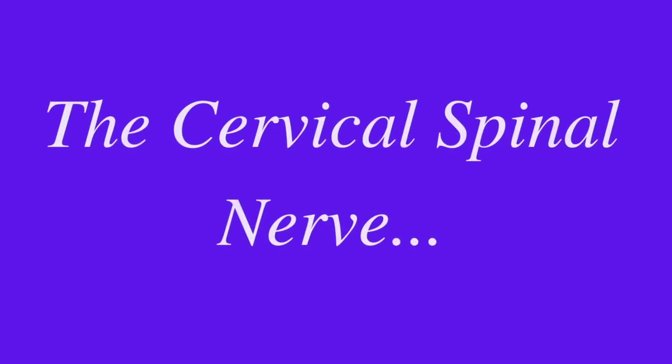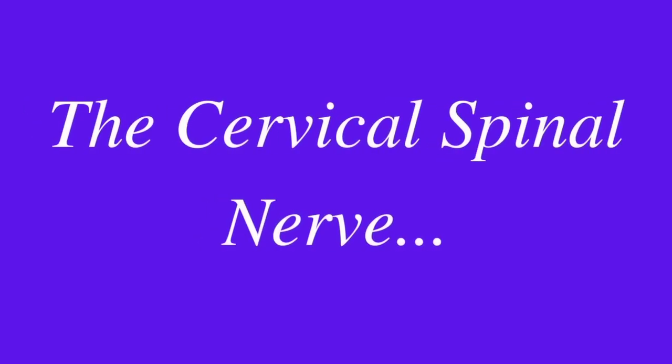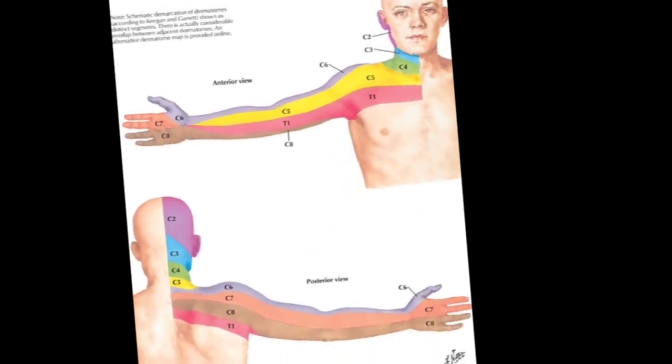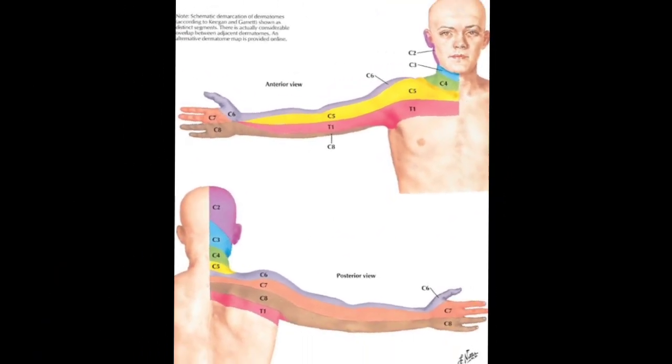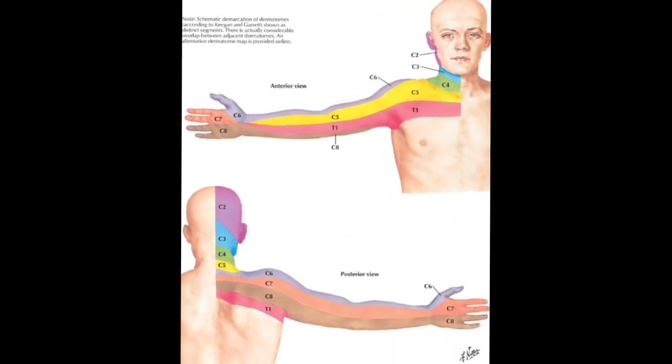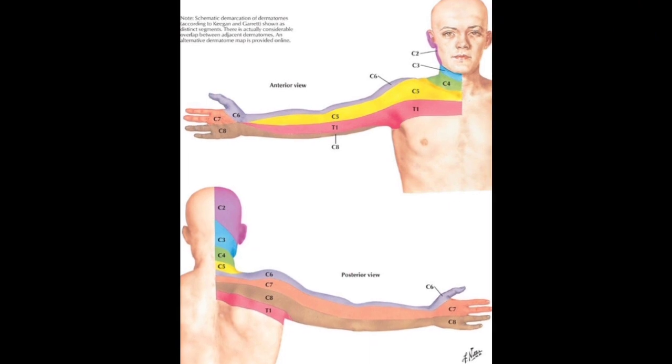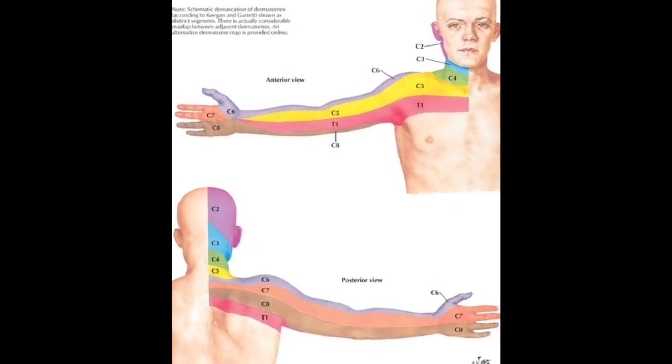The cervical spinal nerves C1 to C8 supply the neck, shoulders, arms, hands, and the diaphragm.